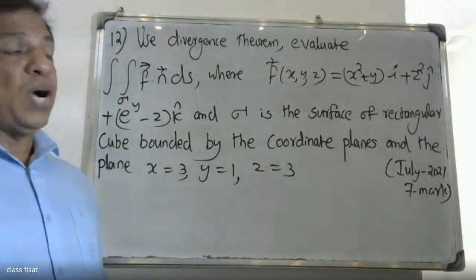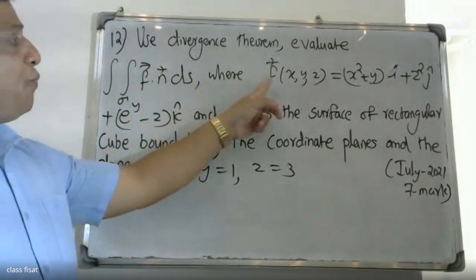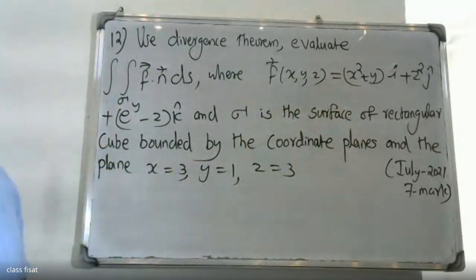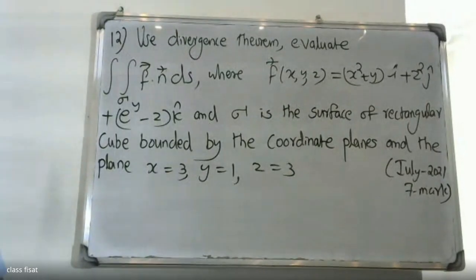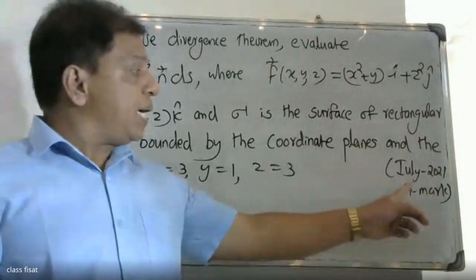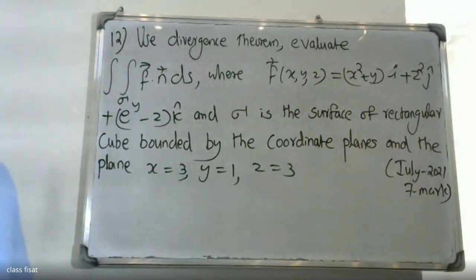Use Divergence Theorem to evaluate the double integral over sigma of F dot n dS, where F(x,y,z) equals (x² + y)i plus (y + z²)j plus (e^(y-z))k, and sigma is the surface of the rectangular cube bounded by the coordinate planes and the planes x = 3, y = 1, z = 3.